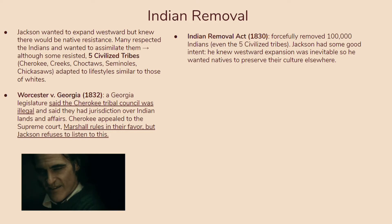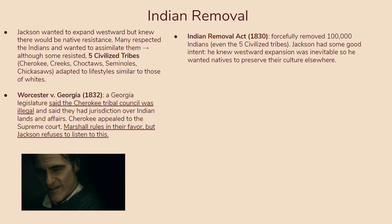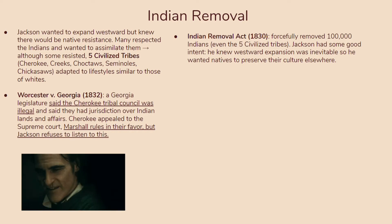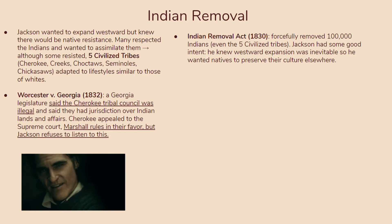In some sense, Jackson did have some good intent — he knew westward expansion was inevitable, as people always needed more land since tobacco was destroying the soil and families needed more space. He knew it was going to happen whether or not the natives wanted it, and he intentionally wanted the natives to move somewhere else to preserve their culture that way. Still, the methods with which he did this were just indefensible.